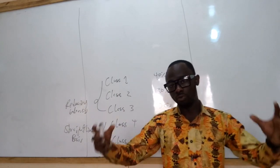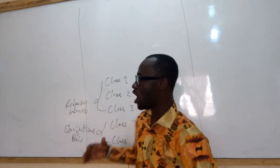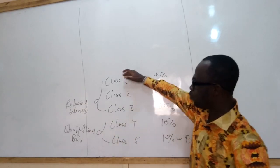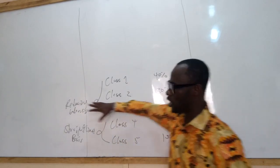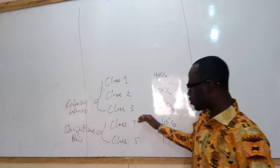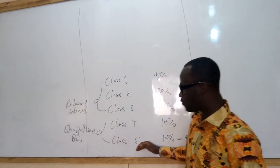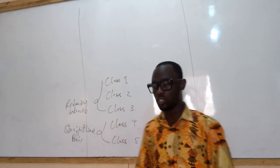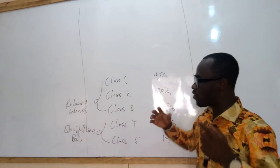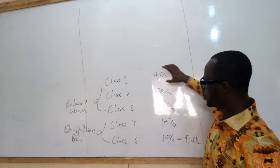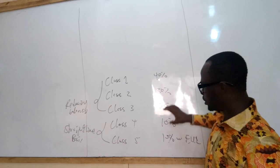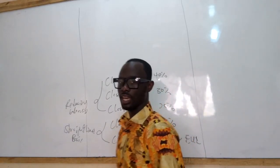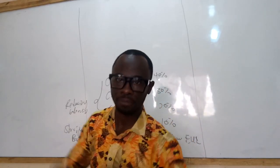So those are the five classes — the pool of assets — and how we deal with them: Classes 1, 2, 3 on the reducing balance method; Classes 4 and 5 on the straight line method. The rates are 40%, 30%, 20%, 10%, and 10% respectively.